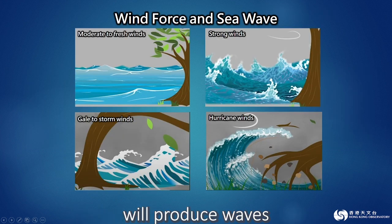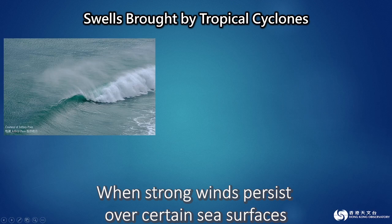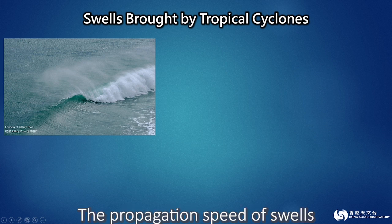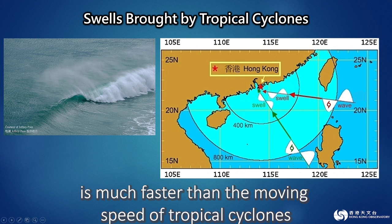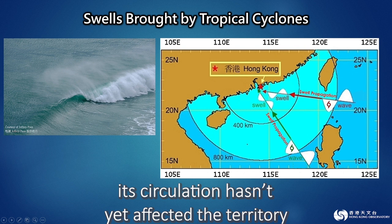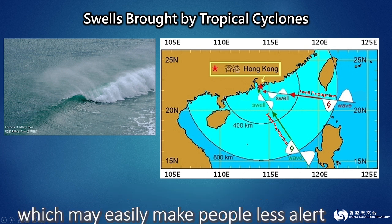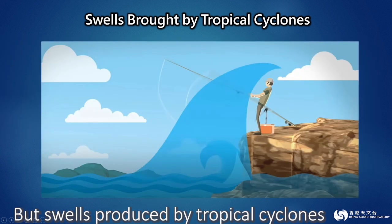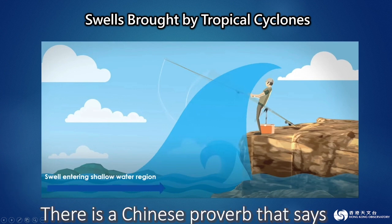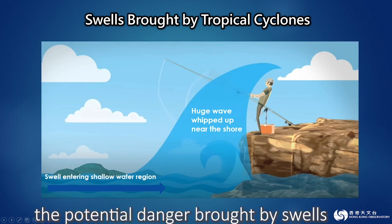Winds blowing on the sea surface will produce waves — the stronger the winds, the higher the waves. When strong winds persist over certain sea surfaces, the waves generated will propagate to far distances; we call them swells. The propagation speed of swells is much faster than the moving speed of tropical cyclones. When a tropical cyclone is very far away from Hong Kong and its circulation hasn't yet affected the territory, the weather will generally be fine with light winds, which may easily make people less alert. But swells produced by tropical cyclones might have already propagated to Hong Kong. When swells enter shallow water regions, their height will increase. There is a Chinese proverb: 'three-foot wave without wind.' So never underestimate the potential danger brought by swells.